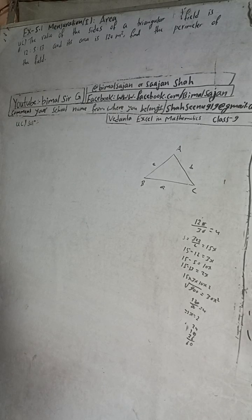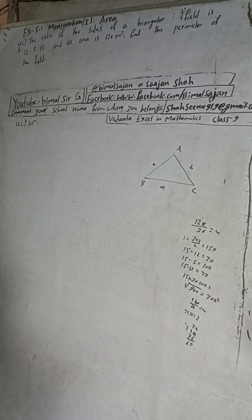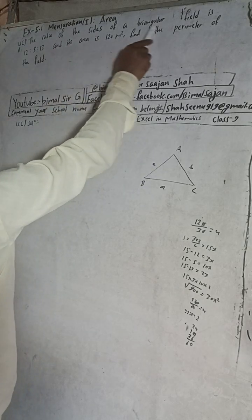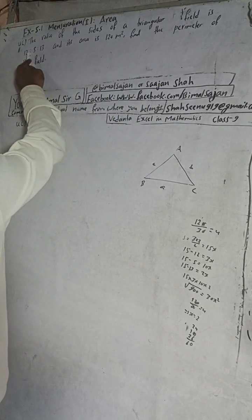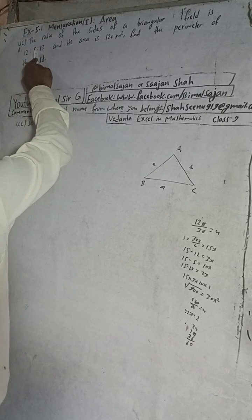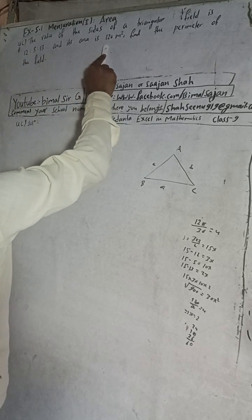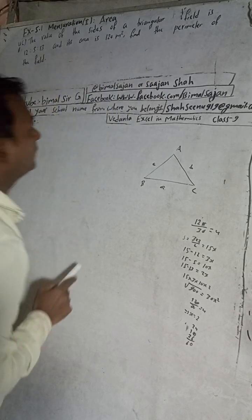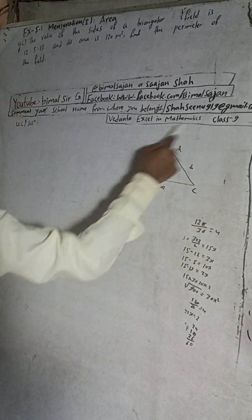Hi class 9 and 10 students, welcome back to Bimal Sir's YouTube channel. This is question number 4C, exercise 5.1, mensuration first part — area. The question: the ratio of the sides of a triangular field is 12:5:13 and its area is 120 meters square. Find the perimeter of the field.